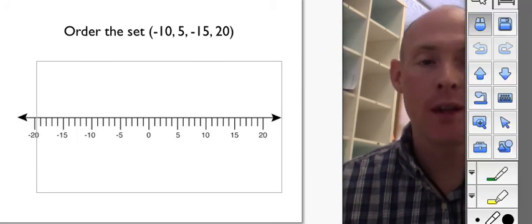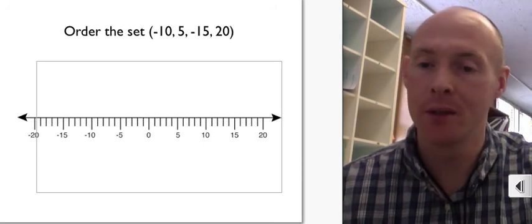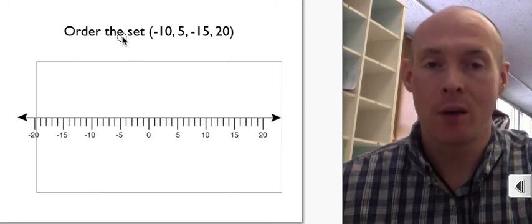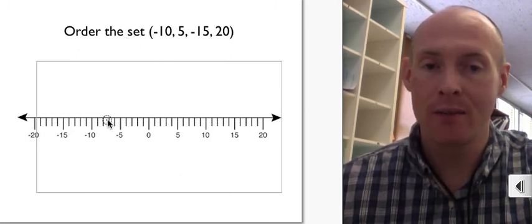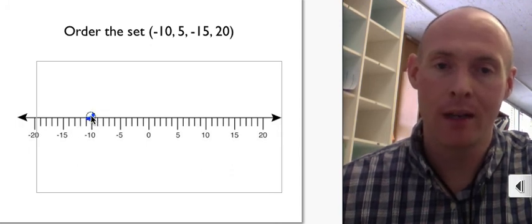Okay. As you're doing that, I will pull up my pen and plot these numbers. I'll use blue. Okay. First thing, order the set. First number is negative 10. So what I will do is I will plot where negative 10 is.